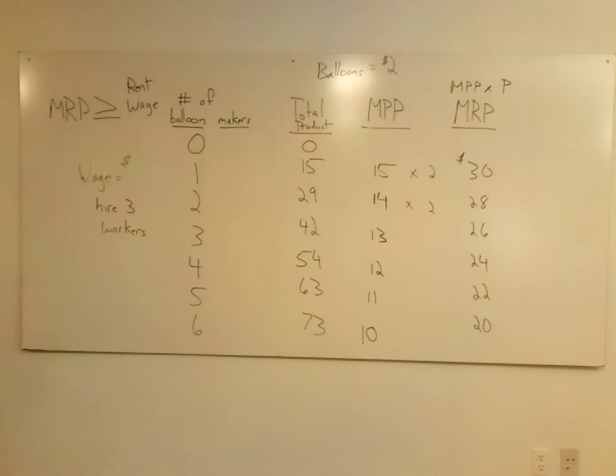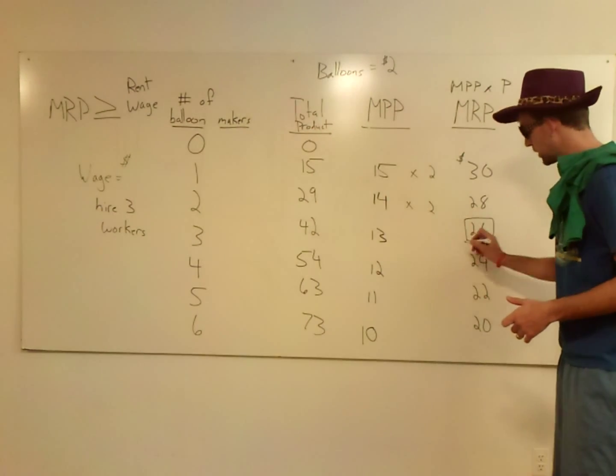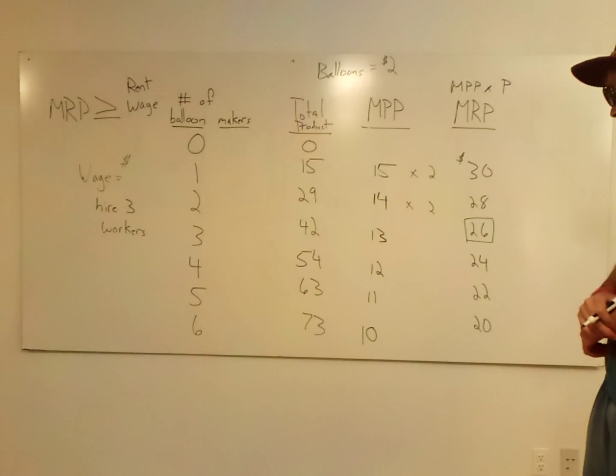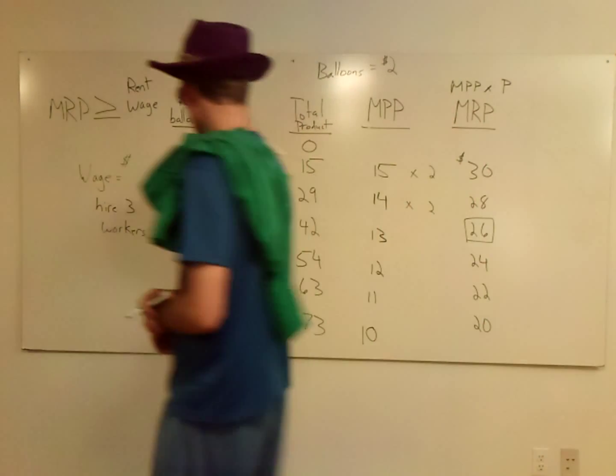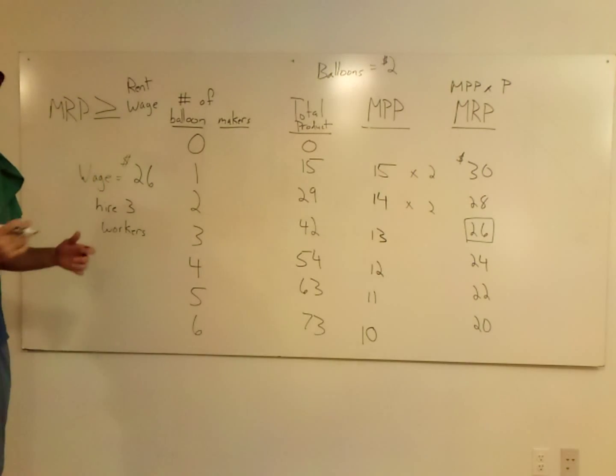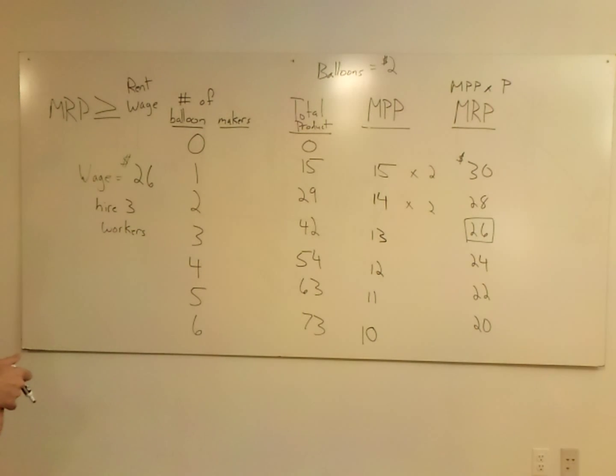What would the wage have to be? There may be more than one answer here. So you want to hire three workers. So the thing I'm going to do, first, the third worker is worth $26. So on the high end of your wage category, it would be $26. You could have said you'd have paid him $25, $24, anything $26 and below.